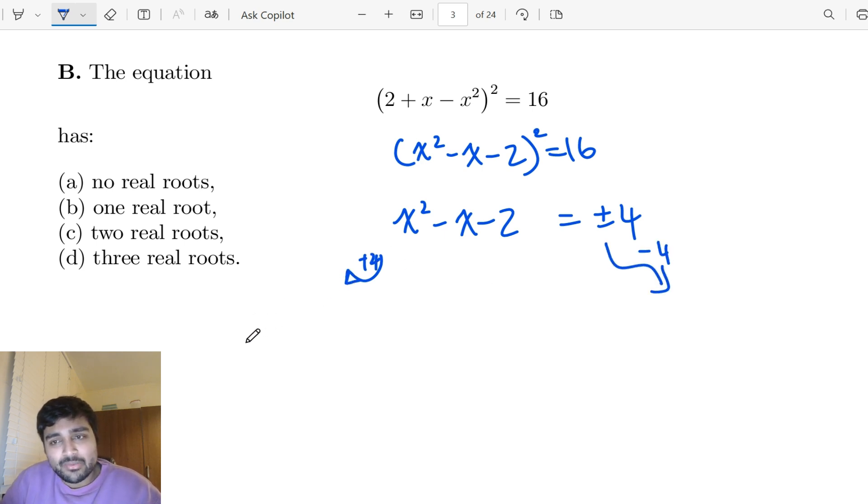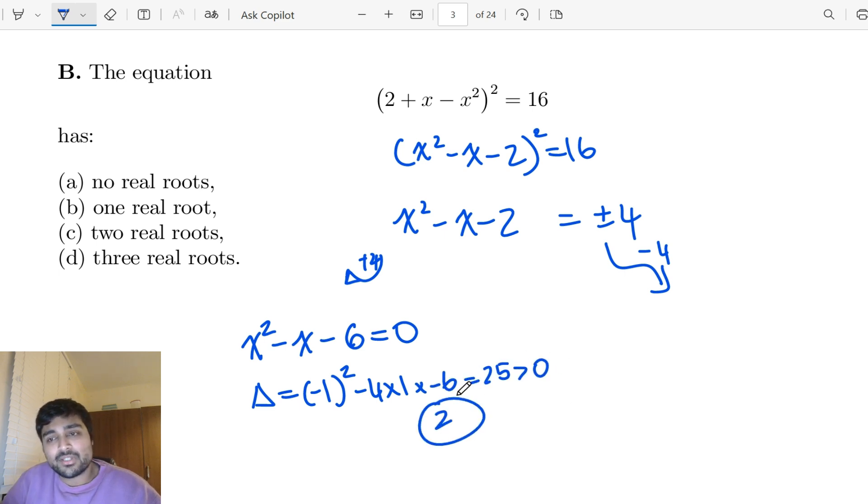So if you do the plus 4 case first, we're going to get x² - x - 6 = 0. And now we want to know how many real roots this has. You could just factorize this or we can just use the discriminant. So it's going to be (-1)² - 4(1)(-6), and that's 25, which is clearly positive. So that gives me two solutions.